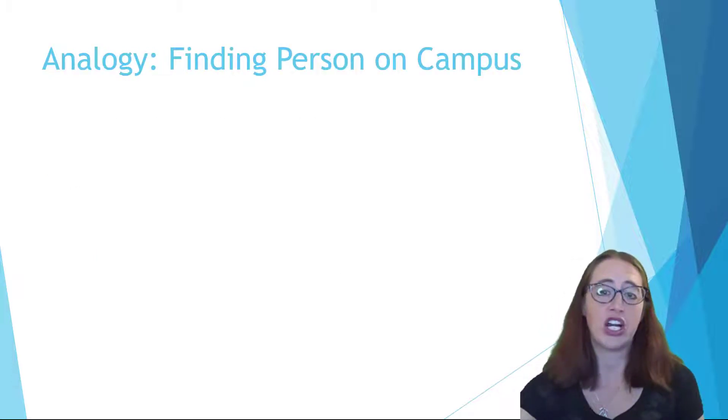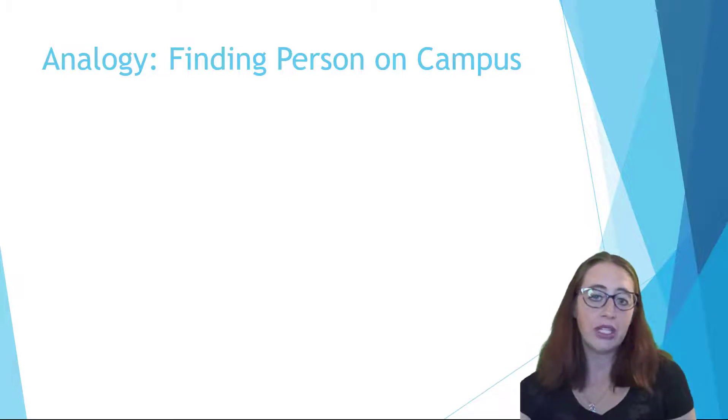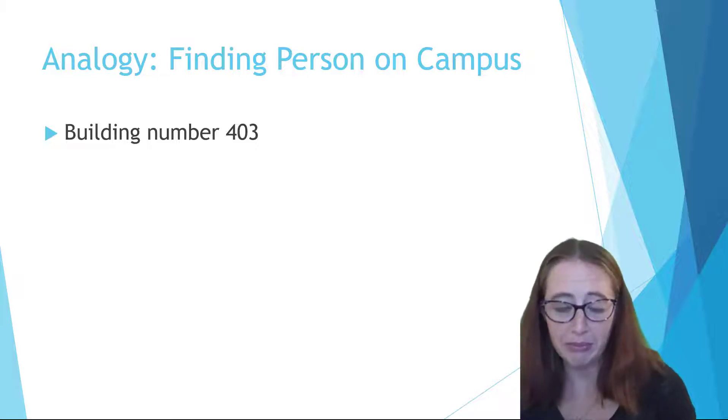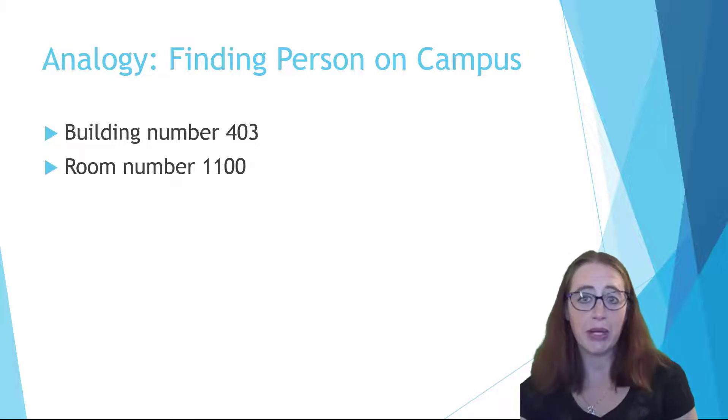Let's say we are trying to describe a person on campus. We could start by saying that they must be in building 403. This might describe a thousand students at a given time. We could then do more describing by saying that they're in room 1100. This gets us to a lecture hall. So building 403 room 1100 may describe 400 students. By stating the building number, we're limiting ourselves to how many students we could be talking about. By stating the room number, we're limiting it further.